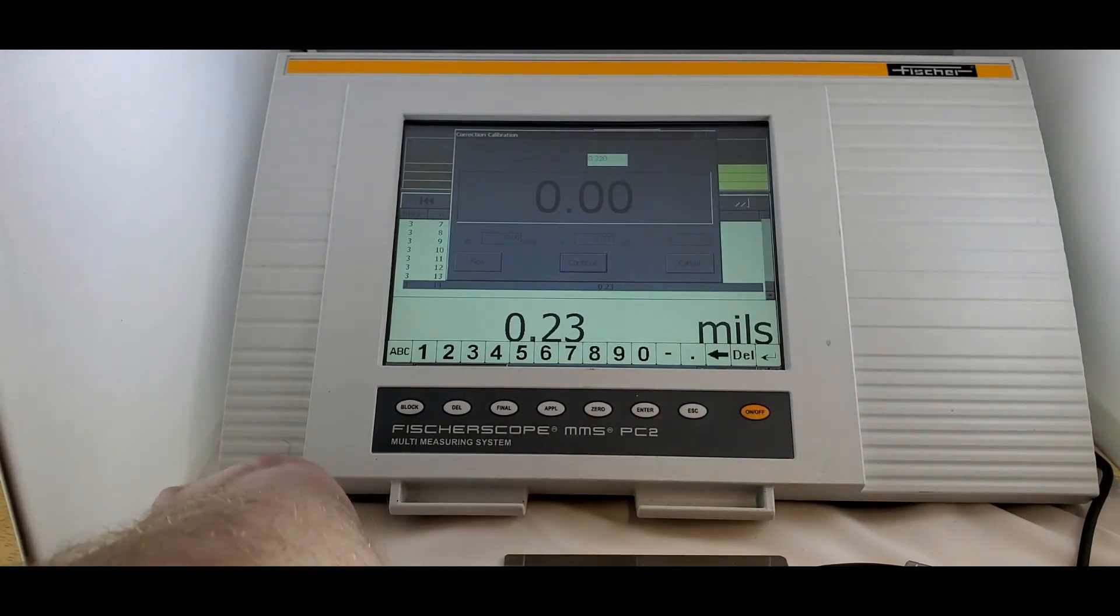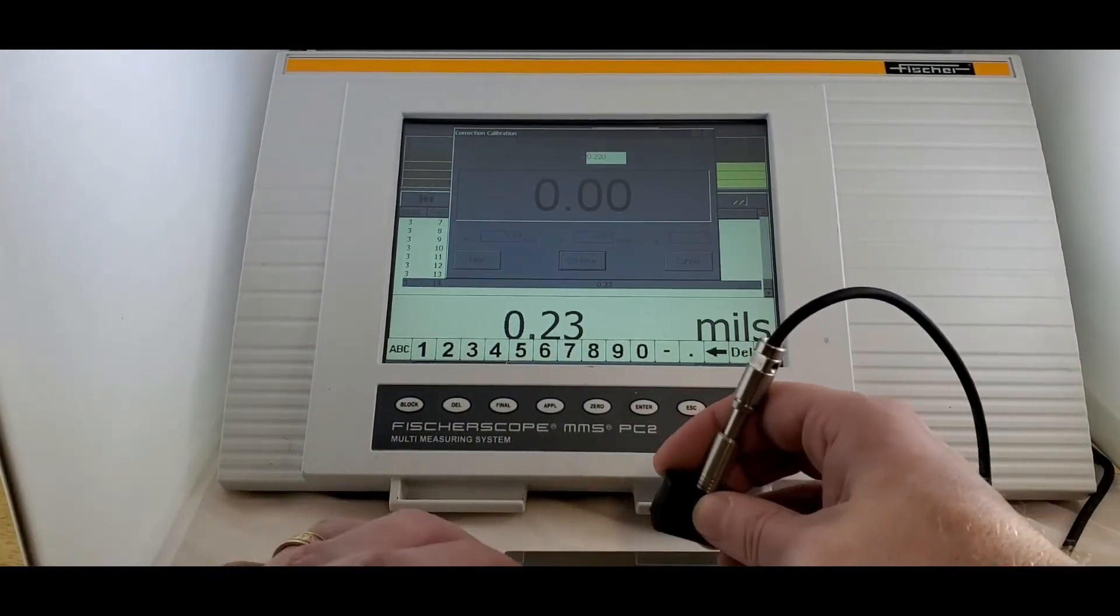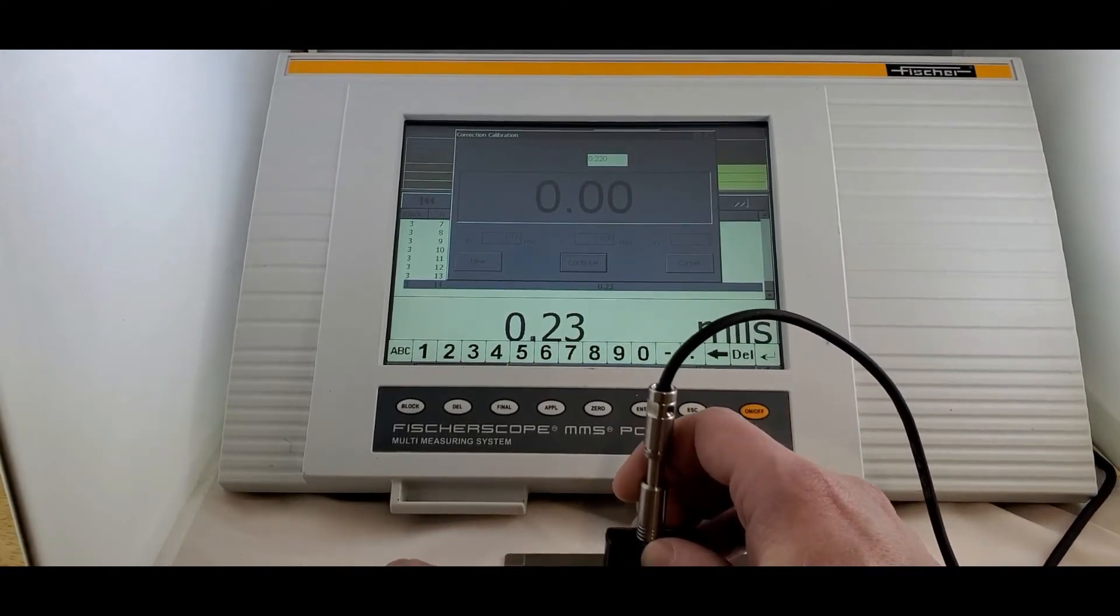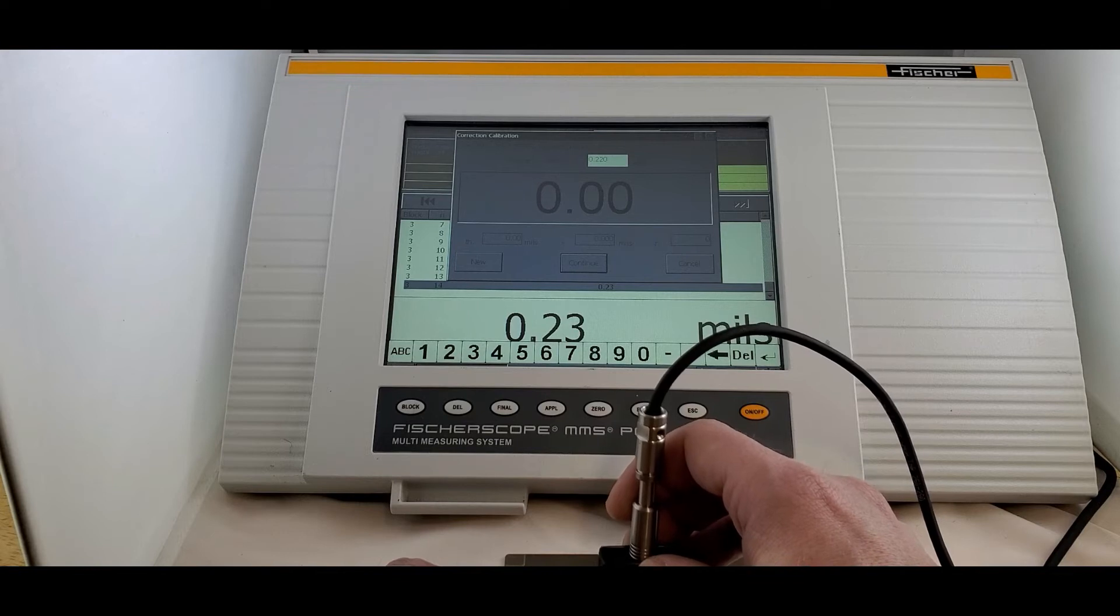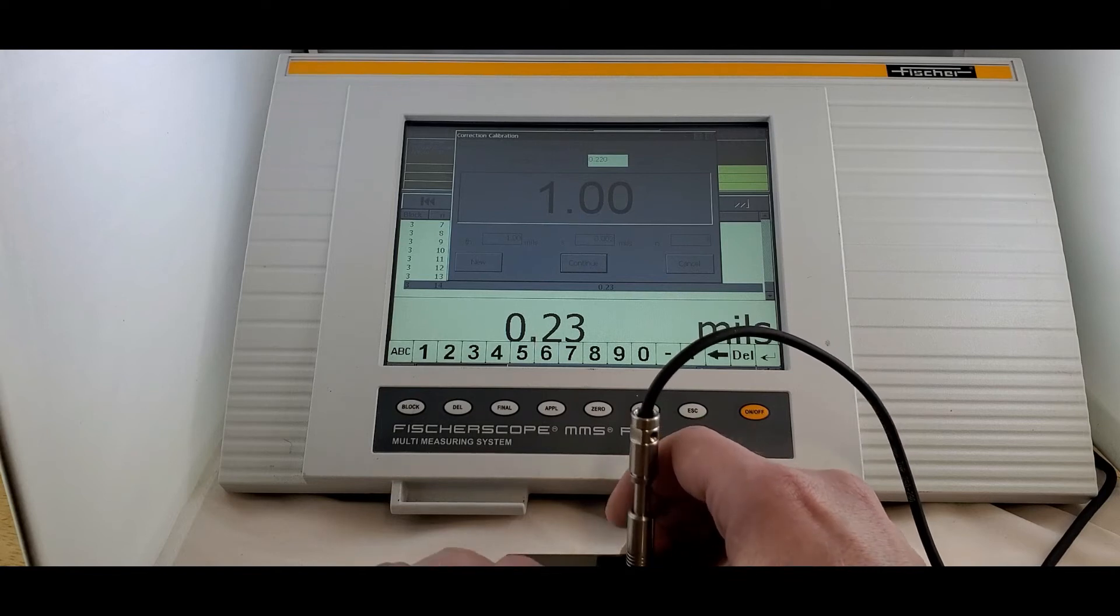So the first standard is going to be our low standard. You could do the high standard, but just to make sure that we do everything in the right order and get everything in correctly, I like to work from low to high. So again, we're going to take five measurements. One, two, three, four, five.